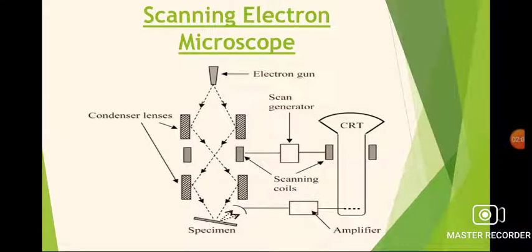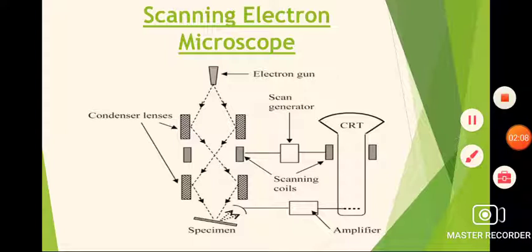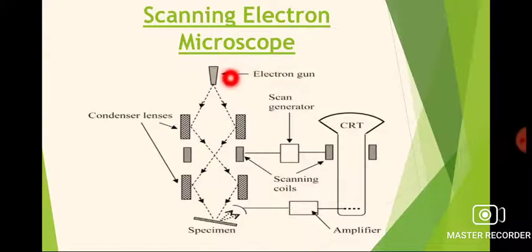Now let us move towards the scanning electron microscope. This figure shows the scanning electron microscope which consists of electron gun, condenser lenses, the specimen, scanning coils, scan generator, CRT, and amplifier. The key components of scanning electron microscope are indicated in the diagram here.